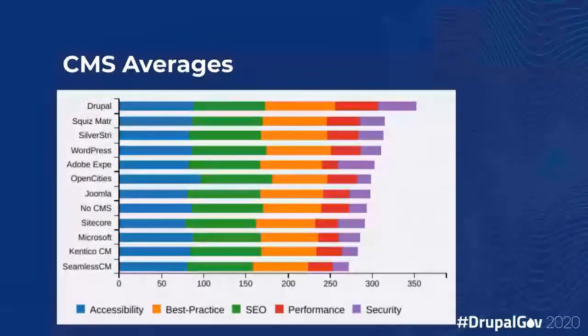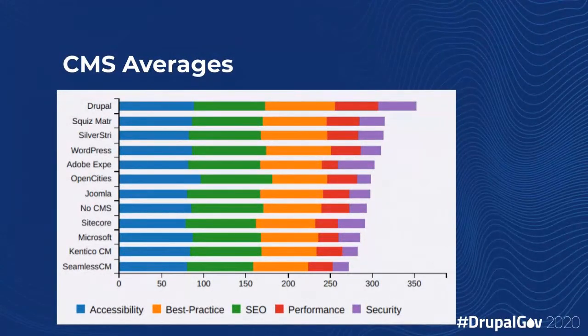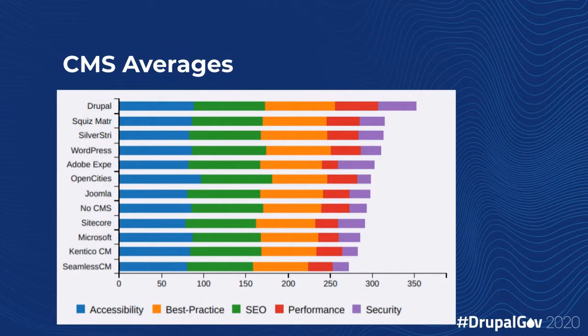Let's turn to the CMS averages. This is probably the first and most relevant slide for most of us — the average scores we get for content management systems. What we're looking at here is a stacked bar chart of the different dimensions. The longer the bar, the better the score. You can see here that Drupal is doing particularly well, and it gaps out ahead of a lot of the other CMSs. Most CMSs do quite well on accessibility and SEO — that's the bread and butter of web development. But it's really around best practice, performance, and security that Drupal is shining, allowing it to take first place.